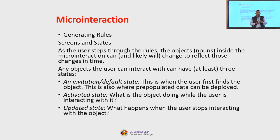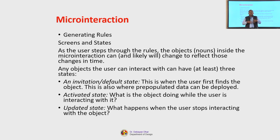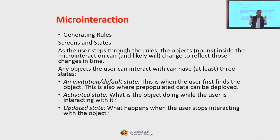Any objects the user can interact with can have at least three states through which we perceive or understand the information. These states are: an invitation or the default state, meaning this is when the user first finds the object — and this is also where pre-populated data can be deployed.